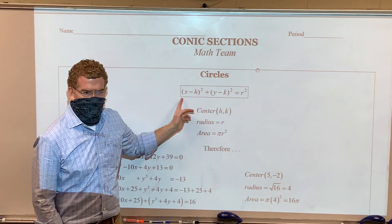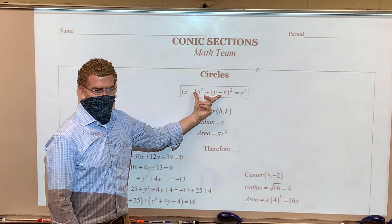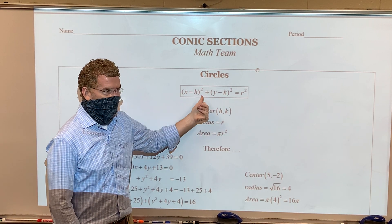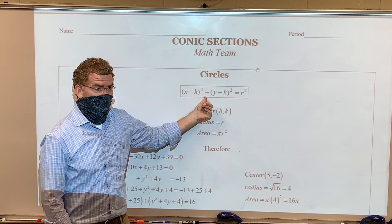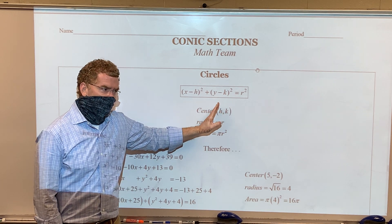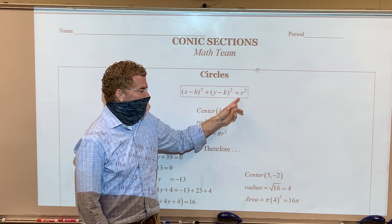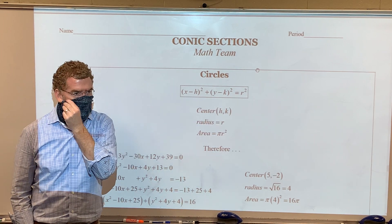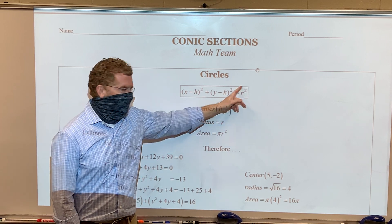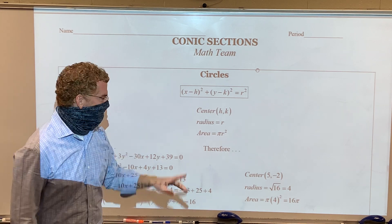First thing: circles. Hopefully everybody remembers the circle form — you've been seeing that for a while. You know the center can be found by looking at the values with the x and the y. If you see something like x minus 2, the coordinate would be 2; if it's something like y plus 3, the y coordinate would be negative 3. So you change the signs to get the center, and then whatever you have it equal to would be your r squared, which means to find your radius you square root that.